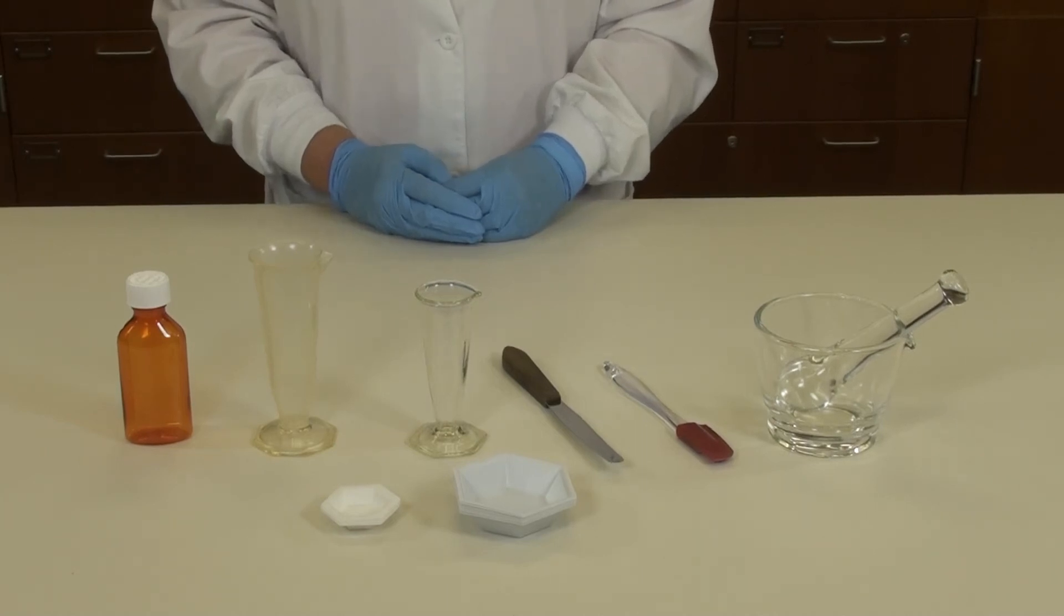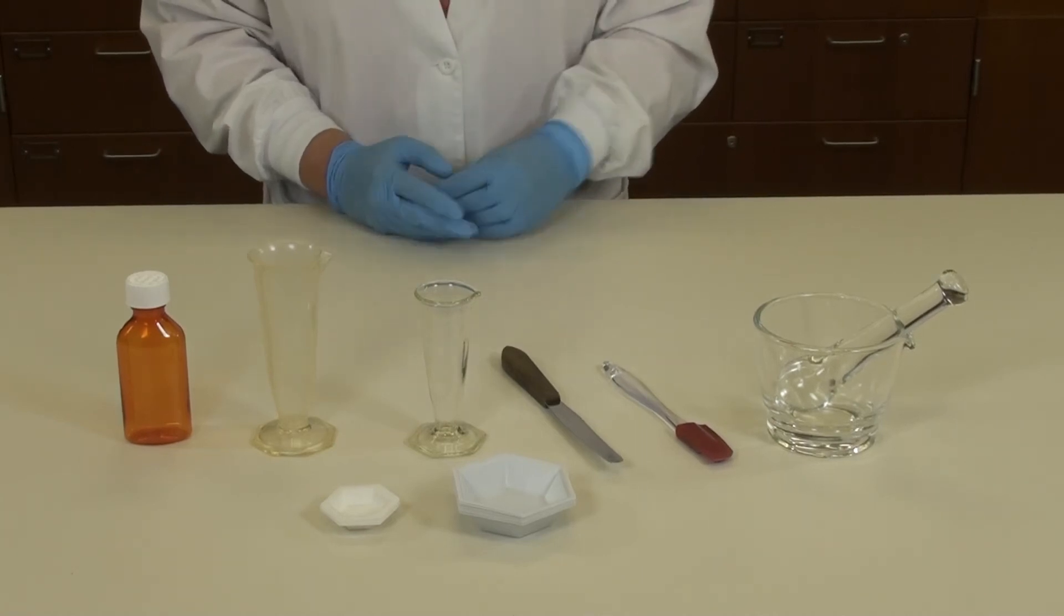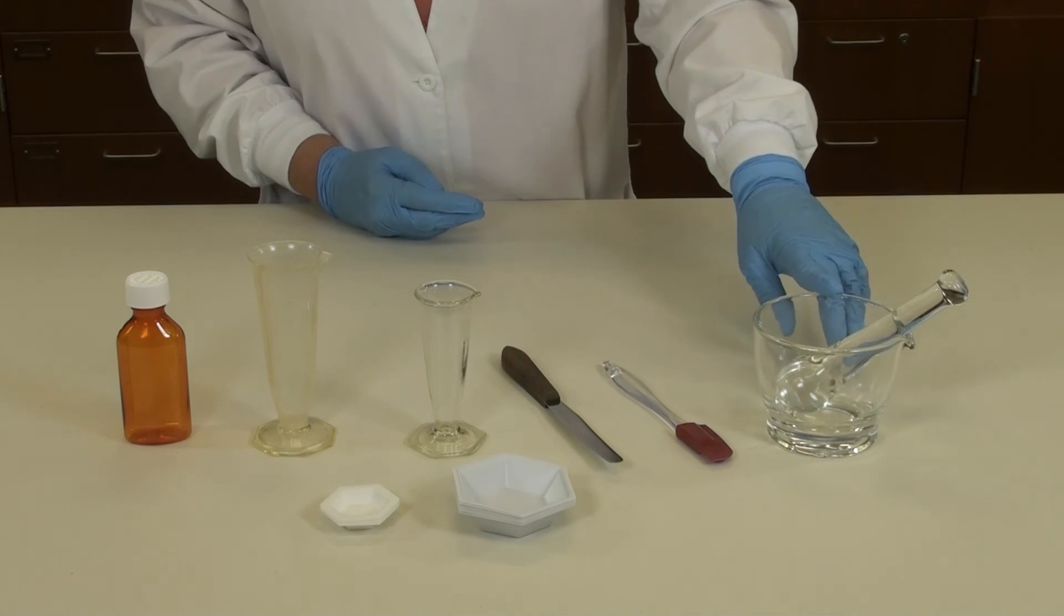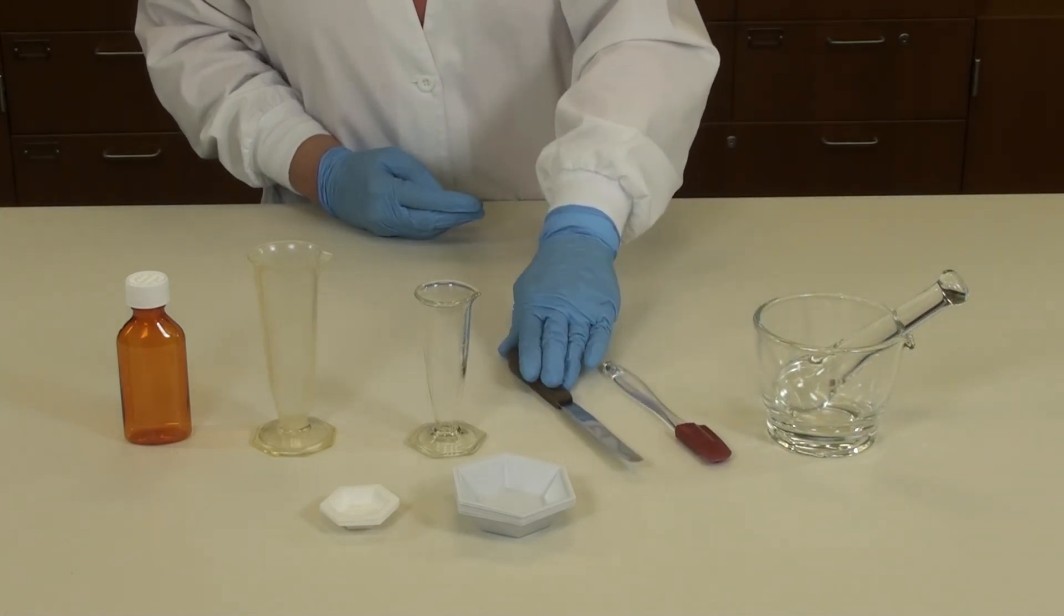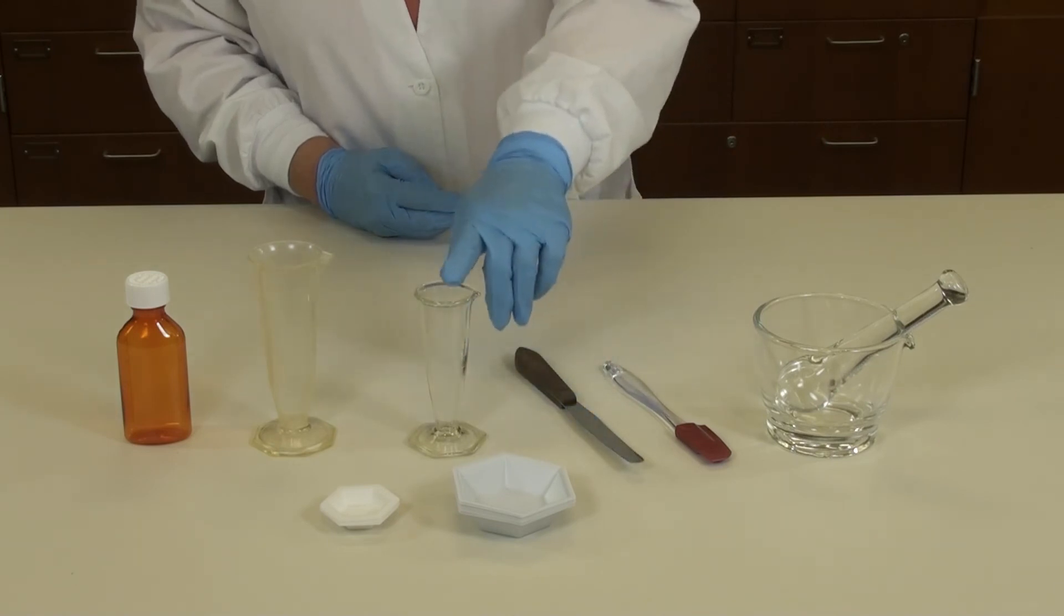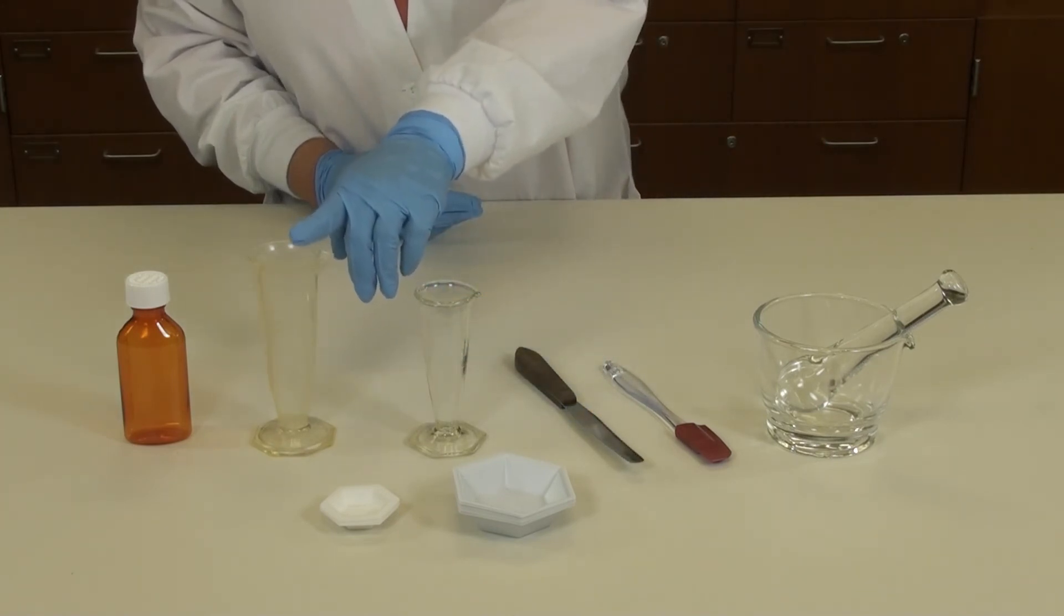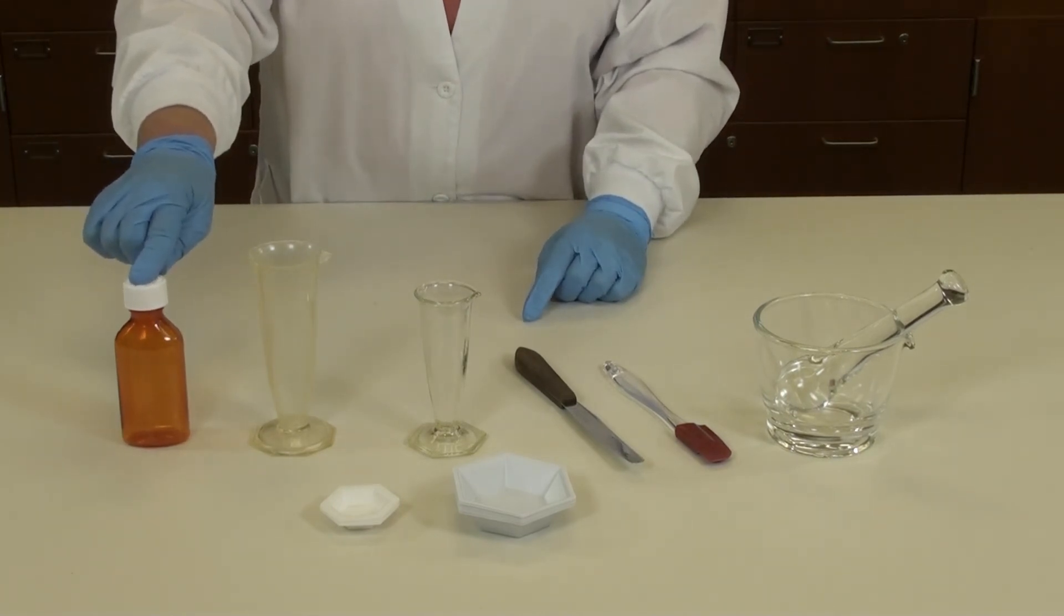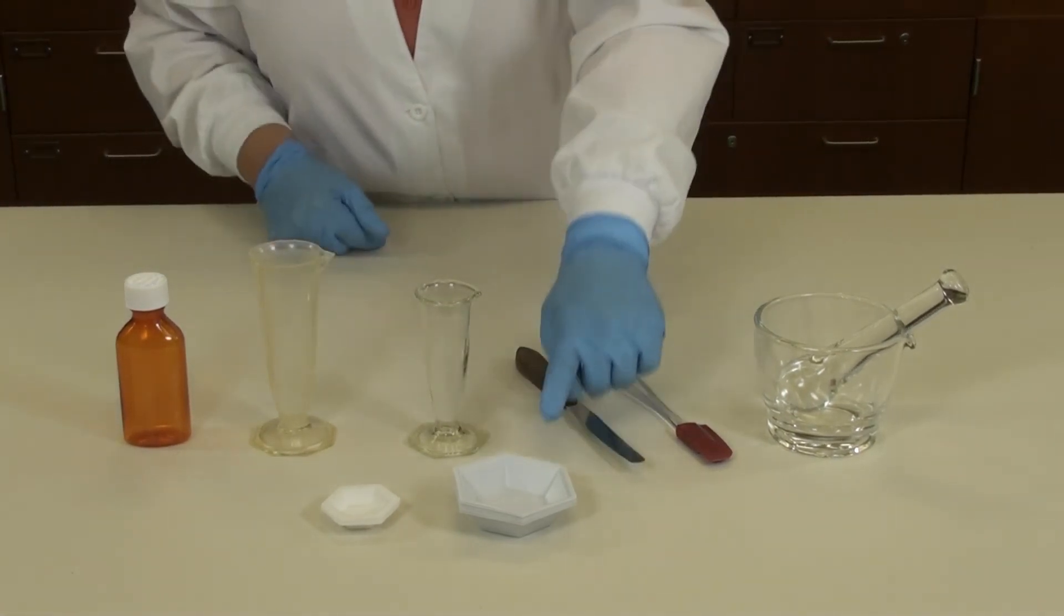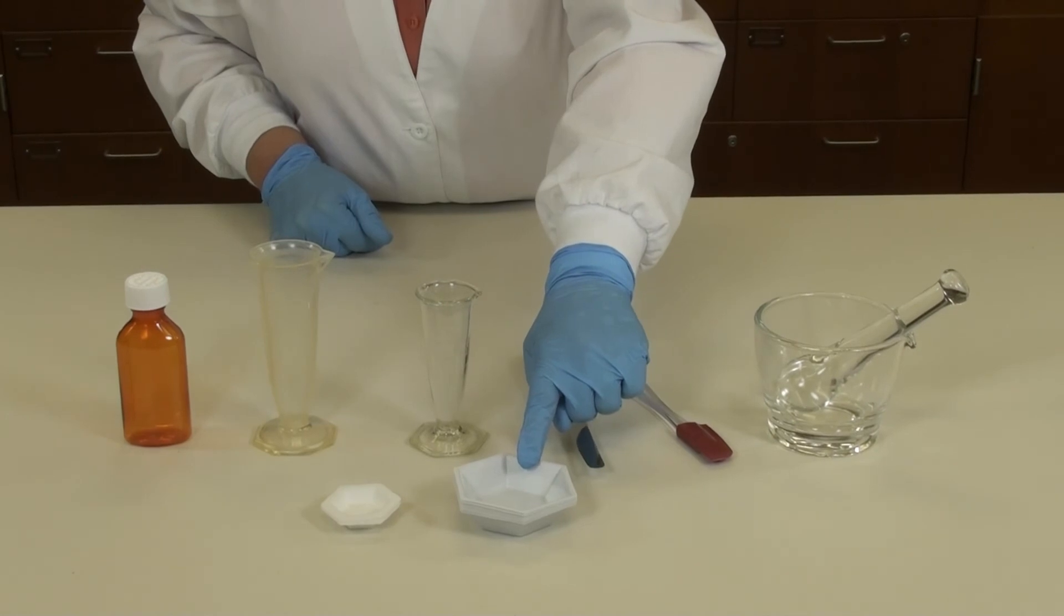The required equipment for suspensions will be a glass mortar and pestle, a rubber spatula, a small metal spatula, a 2 or 4 ounce graduated conical, a 3 ounce oval prescription bottle, and weigh boats, both medium and small.